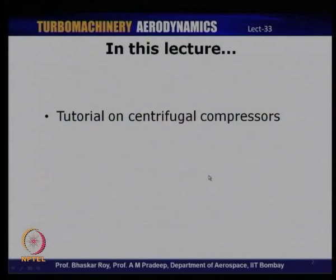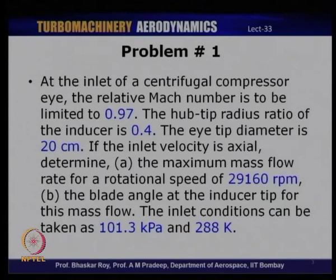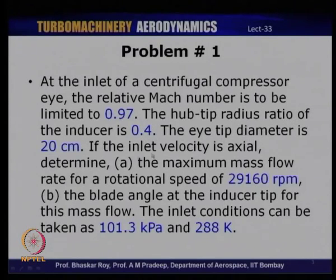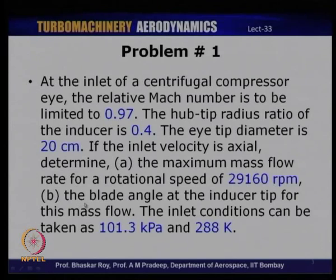Let us look at the first problem. At the inlet of a centrifugal compressor, the relative Mach number is to be limited to 0.97. The hub-to-tip radius ratio of the inducer is 0.4. The tip diameter is 20 centimeters, and if the inlet velocity is axial, determine: part A — the maximum mass flow rate for a rotational speed of 29,160 rpm; part B — the blade angle at the inducer tip. Inlet conditions are 101.3 kPa and 288 K.